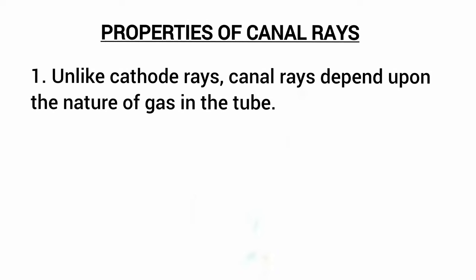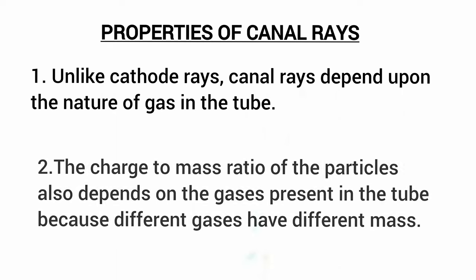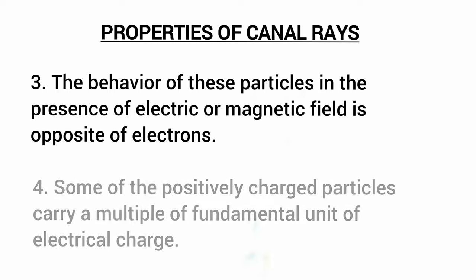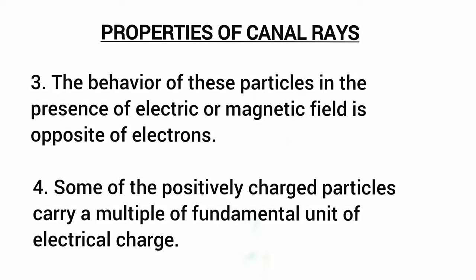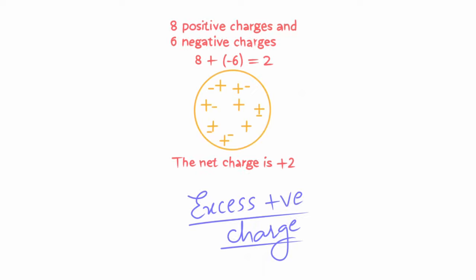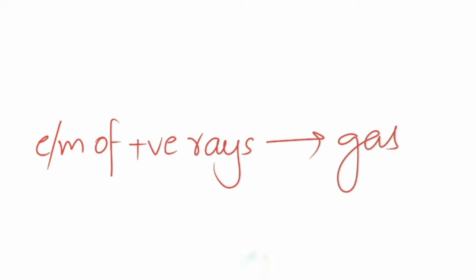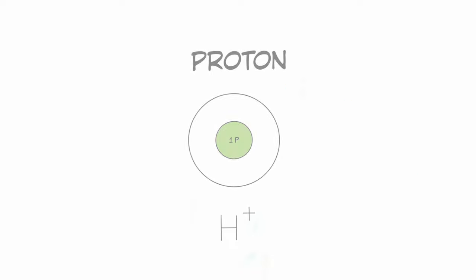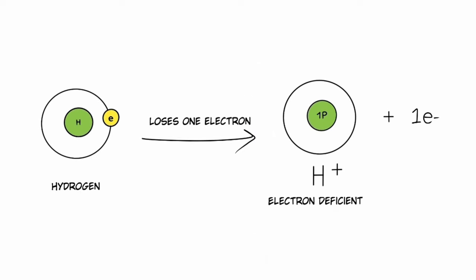From this, the properties of canal rays can be understood as follows. Unlike cathode rays, canal rays depend upon the nature of gas in the tube. The charge to mass ratio of the particles also depends on the gases present in the tube because different gases have different mass. The behavior of these particles in the presence of electric or magnetic field is opposite to that of electrons. Some of the positively charged particles carry a multiple of the fundamental unit of electrical charge. It may contain multiple positive or negative particles and the overall charge may be positive due to an excess of positive charge. The E/M ratio of positive rays depends on the gas in the tube. Hydrogen was used as its mass would be the lowest, giving it the highest E/M ratio. Thus, the name proton was given to the hydrogen ion formed by losing an electron from the hydrogen atom.